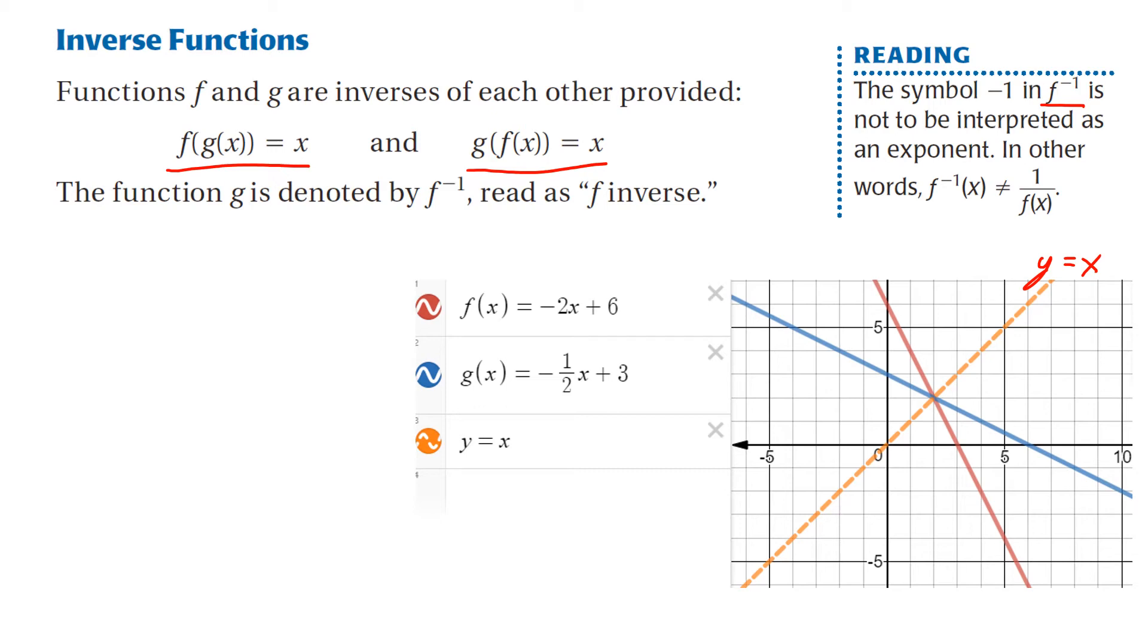Another way is to pick a point and substitute it in one function. For example, I'm going to start with x equals 5 and find f of 5. When I substitute that, I get negative 10 plus 6, which is negative 4. So that means I have the point (5, negative 4), which would be right down here.